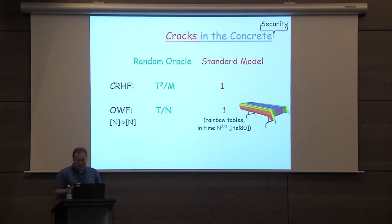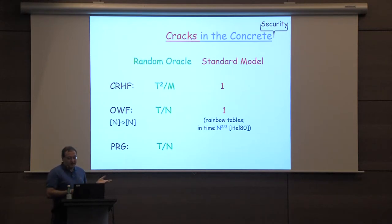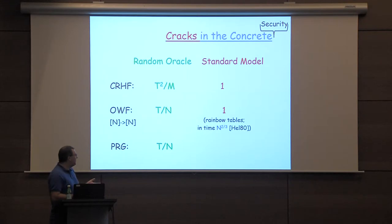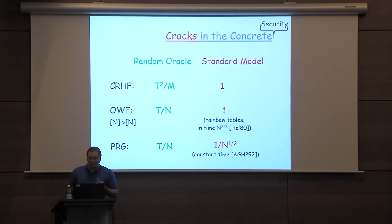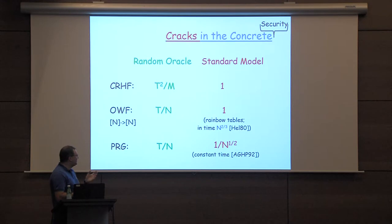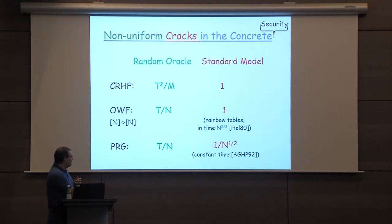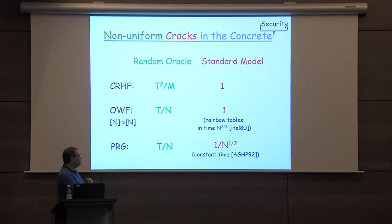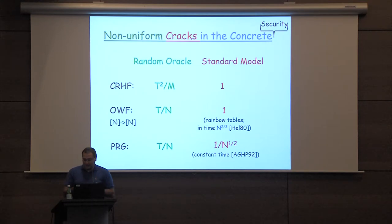Similarly, for pseudorandom generators: brute-force search is the only way to distinguish a PRG from random — that's ideal. However, any particular stretching function has a heavy Fourier coefficient. Translated to actual attacks, it means there is a particular parity of output bits that is a little bit biased — biased by 1 over square root of n. So in constant time, you can distinguish the output from random with advantage 2 to the minus 64. If you plug in n to the two-thirds or one over these expressions, you don't get tight bounds. So we already start to see some mismatches.